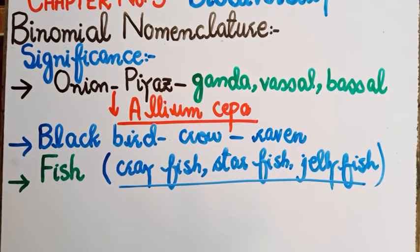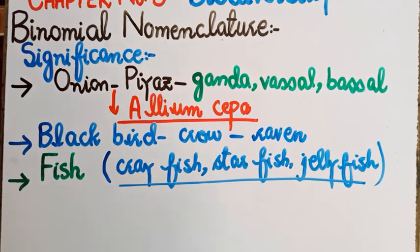لہٰذا اسی confusion کو ختم کرنے کے لیے دنیا میں ایک system introduce کروایا گیا جسے binomial nomenclature کہا جاتا ہے، جس کی بنیاد پر different organisms کو scientific names دیے گئے۔